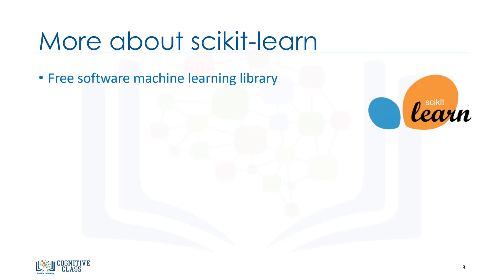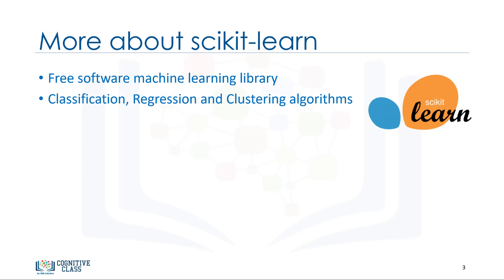Scikit-learn is a free machine learning library for the Python programming language. It has most of the classification, regression, and clustering algorithms, and it's designed to work with the Python numerical and scientific libraries, NumPy and SciPy.